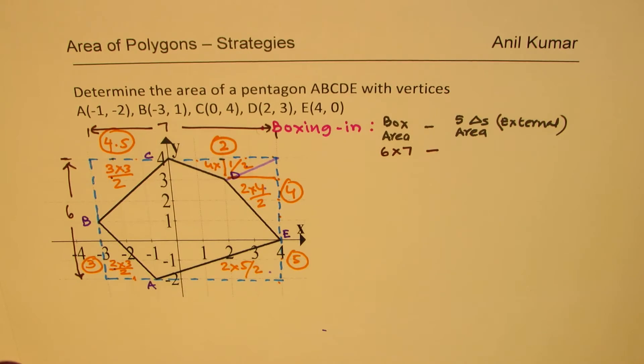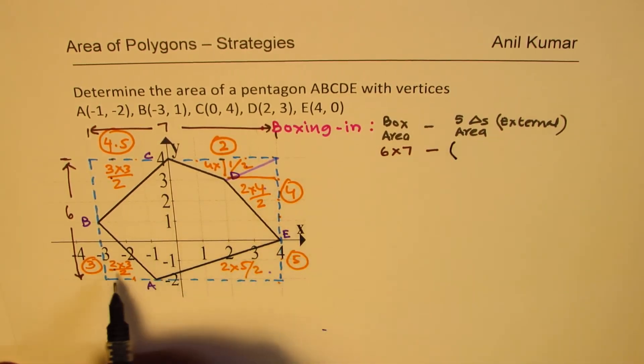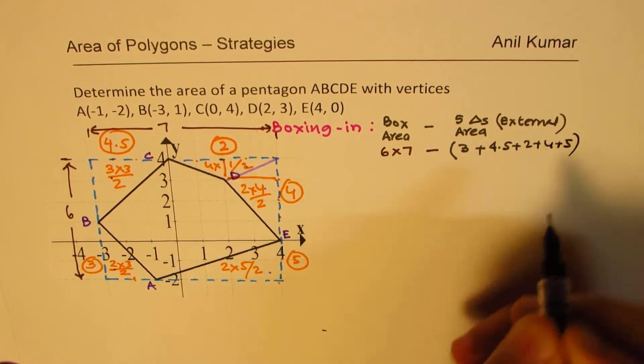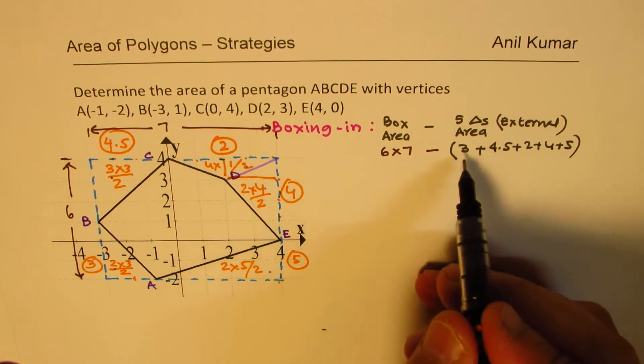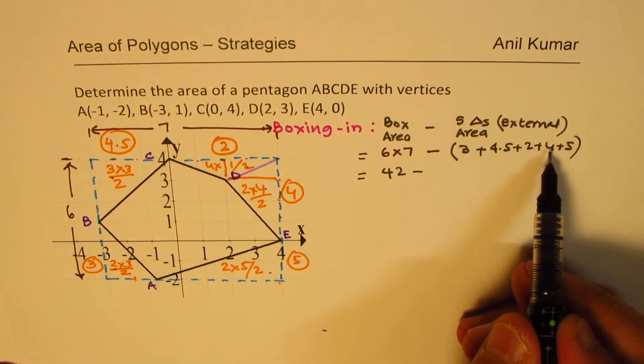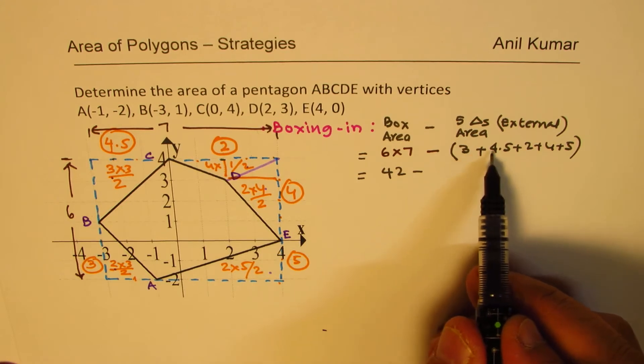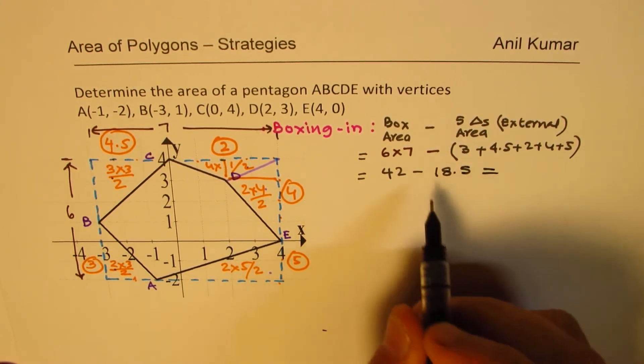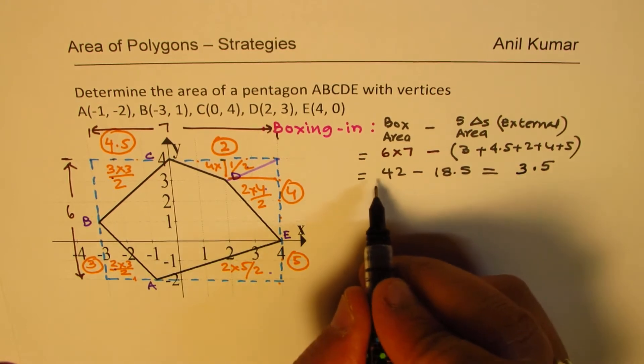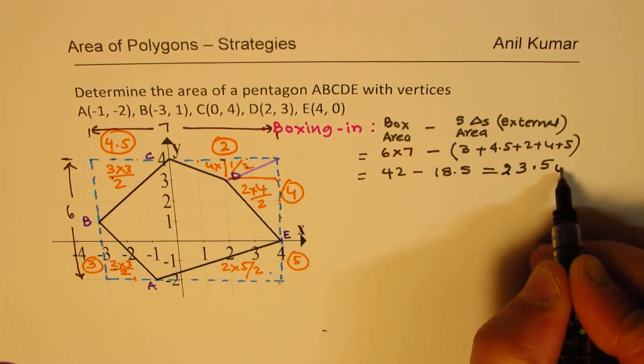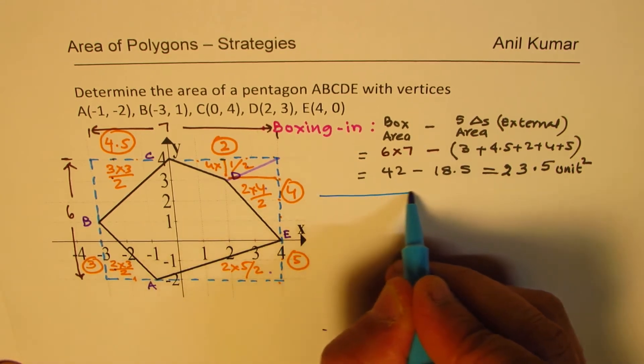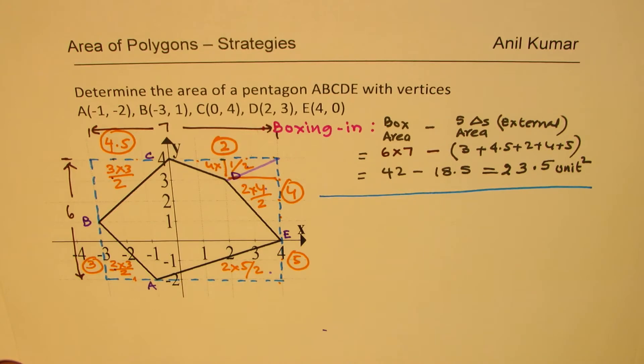So the sum of all these is how much? We can add 3 plus 4.5 plus 2 plus 4 plus 5. So the area becomes 42 minus how much? 4 and 5 is 9, plus 3 is 14, and 4.5 means 18.5. So when you take away 18.5 from 42, you get 23.5 units squared as the area. Perfect. So that's simple enough, and this is excellent strategy to find area of any polygon.